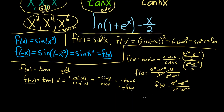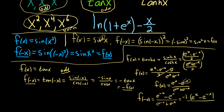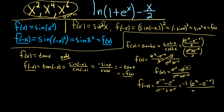Now plugging in negative x, the numerator becomes e to the negative x minus e to the x, and the denominator becomes e to the negative x plus e to the x. We can factor out a negative 1 from the numerator to get negative (e to the x minus e to the negative x), and rearrange the denominator to e to the x plus e to the negative x. This expression is negative tanh x, so the hyperbolic tangent is odd.